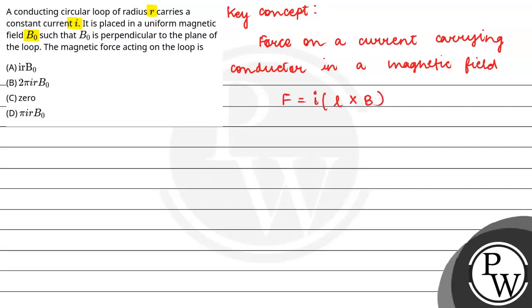Here B is a magnetic field, I is current in conductor, L is current element, L is our current element.